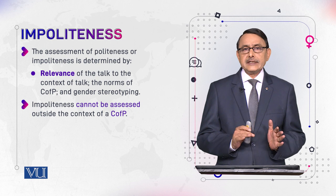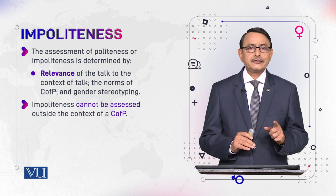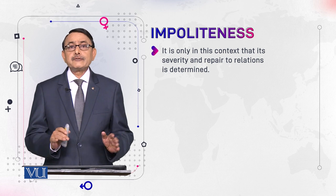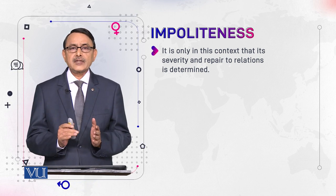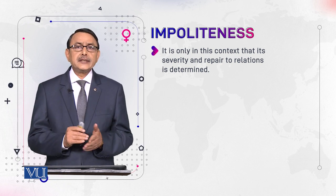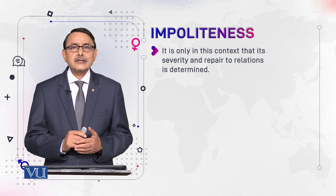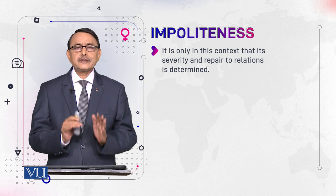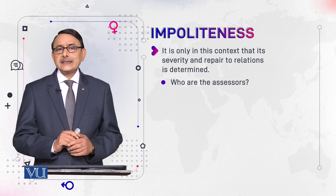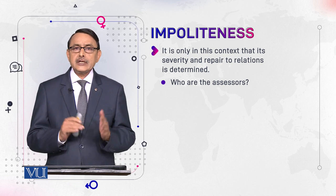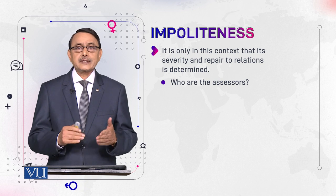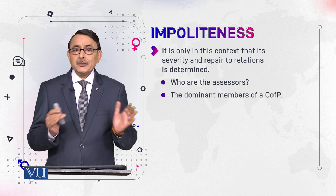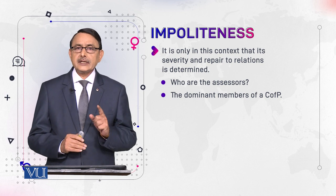Impoliteness cannot be assessed outside of the context of the Community of Practice. It is only in this context that we can gauge its severity and consider how to mend it — what can be done to repair the loss of relationship which results from impoliteness. Who would assess that something is impolite? The seniors and elders at home, or the organization in an office — the dominant members of the Community of Practice are the assessors.